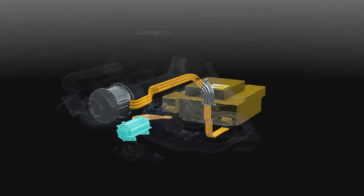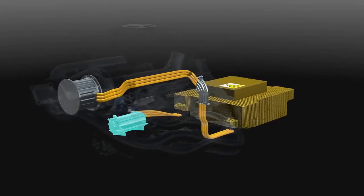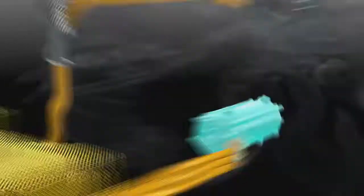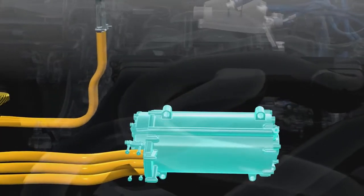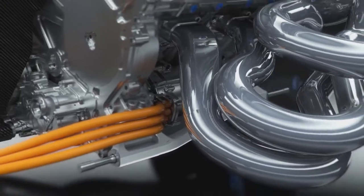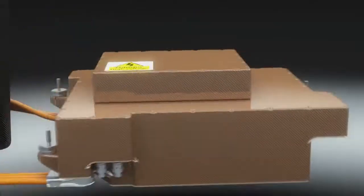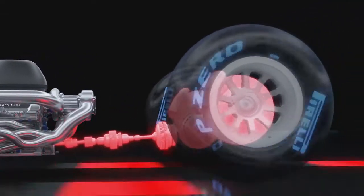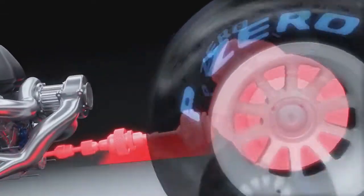The MGU-K delivers up to 160 horsepower for 33 seconds per lap, equivalent to a Mercedes C220 CDI. Connected to the braking system and acting as a generator, the MGU-K can feed so much energy into the battery every lap that you could talk for 370 hours on your BlackBerry smartphone.